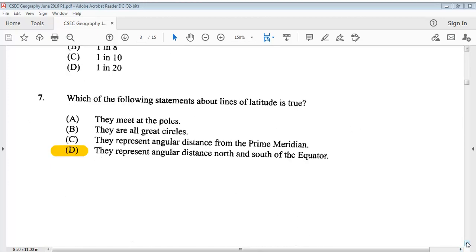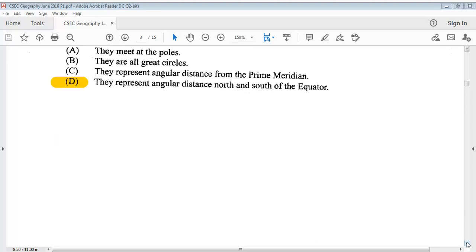Question 7: Which of the following statements about lines of latitude is true? D, they represent angular distance north and south of the equator.